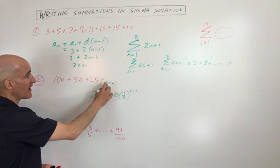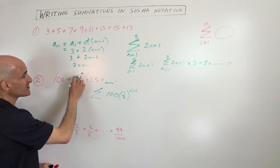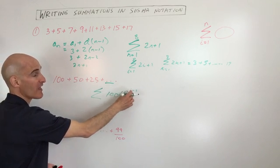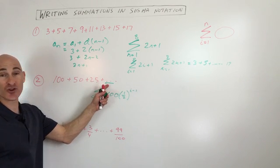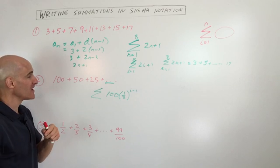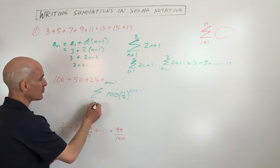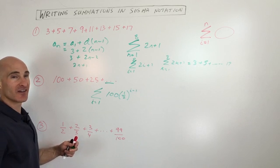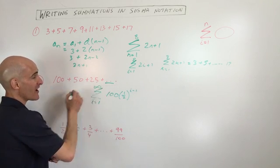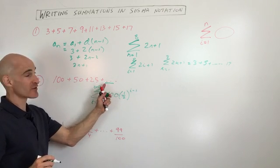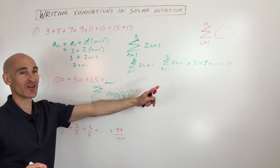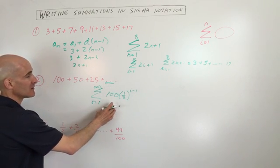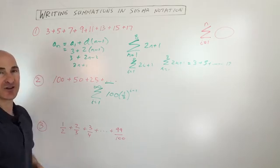So if I wanted to get to the one, two, three, fourth term, I actually have to multiply by a half once, twice, three times, which is one less than the actual term that I'm on, term number four. So i equals one. And what's the top number here? Well, if you said infinity, you're right, because this keeps going. See the ellipsis, the three dots, that just means it keeps going. So this is just going to be an infinite series.